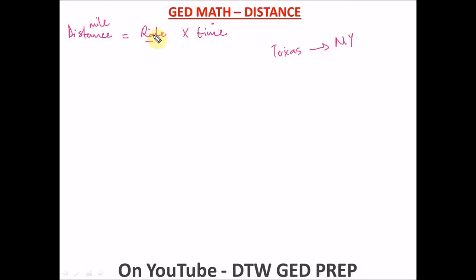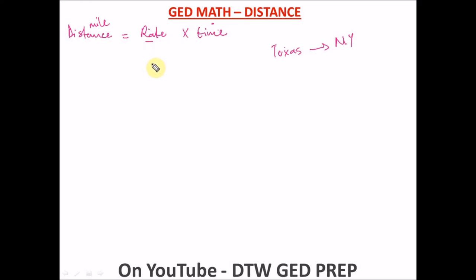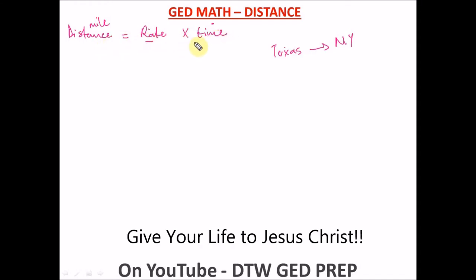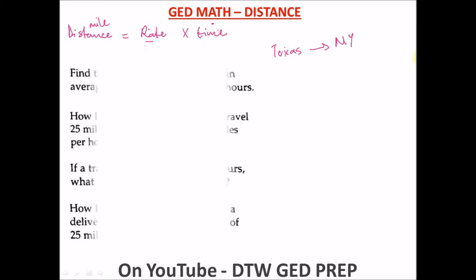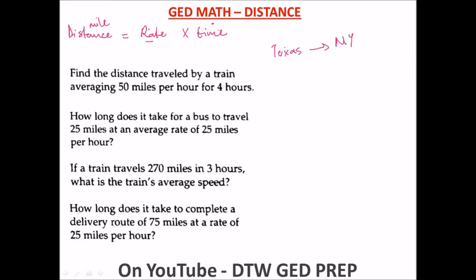So we have our formula: distance equals rate times time. In some questions you'll be given the distance and rate but not the time, so you need to know how to manipulate this formula by making one variable the subject. I have several examples here for us to work through together.